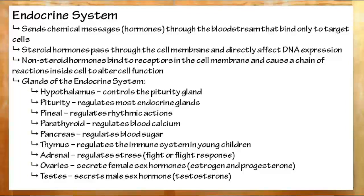The glands in the endocrine system are the hypothalamus, controls the pituitary. Pituitary regulates most glands. The pineal gland regulates rhythmic activities. Parathyroid gland regulates blood calcium. Pancreas regulates blood sugar. Thymus regulates the immune system in children. The adrenal or epinephral glands, which help cope with stress. The ovaries for women, which will secrete female sex hormones. And the testes for men, which secrete male sex hormones.